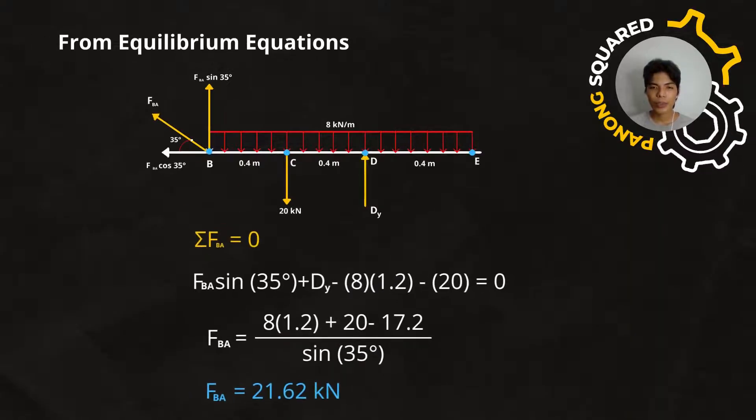Again, using the equilibrium equation, we set the summation of forces in the y-direction equal to 0. So, we now have FB sin(35°) plus Dy. These two forces are positive because the forces act upwards. Minus 8 times 1.2 minus 20. These two forces are negative because the two forces act downwards. That is equal to 0.